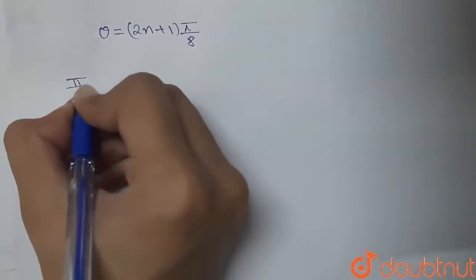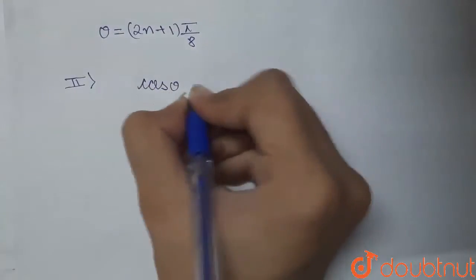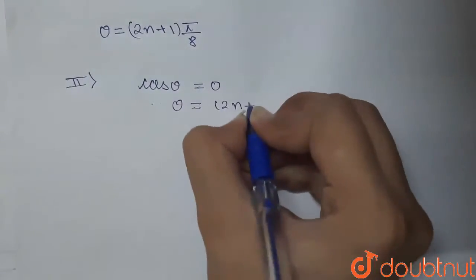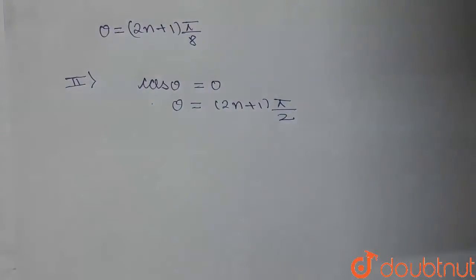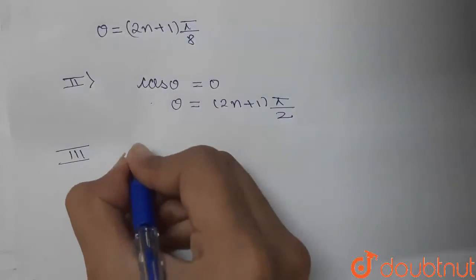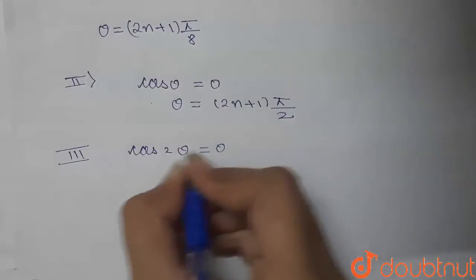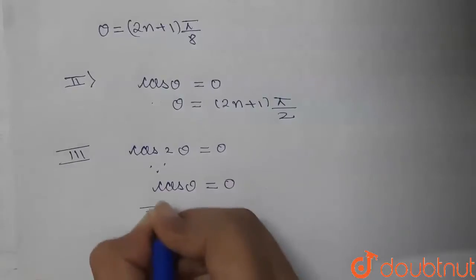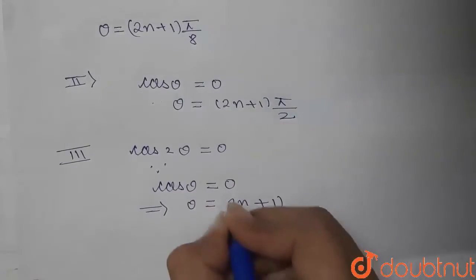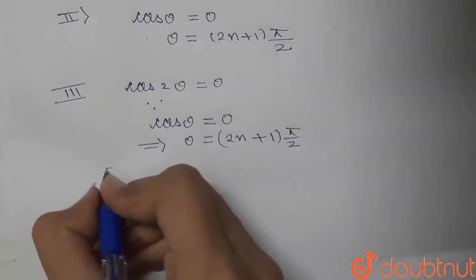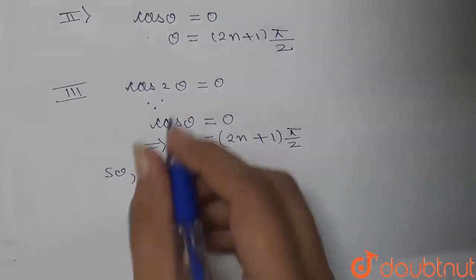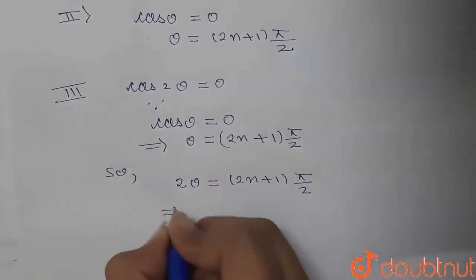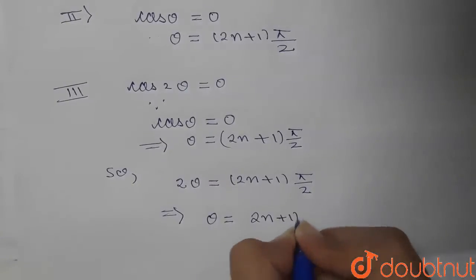For the second factor: cos θ = 0, which directly gives θ = (2n+1)·π/2. For the third factor: cos 2θ = 0, which means 2θ = (2n+1)·π/2, so θ = (2n+1)·π/4.